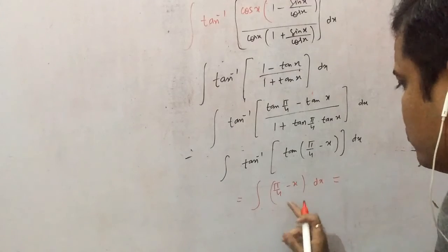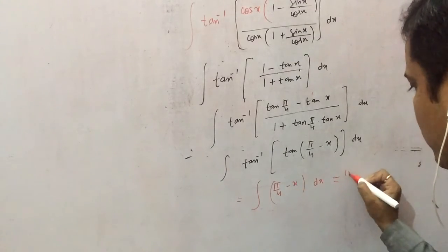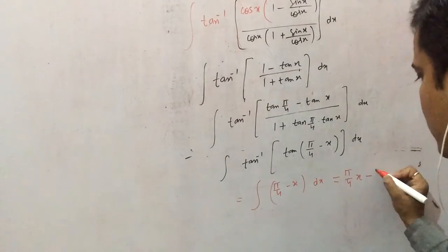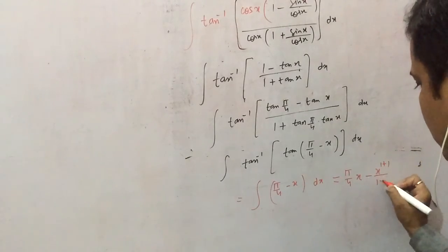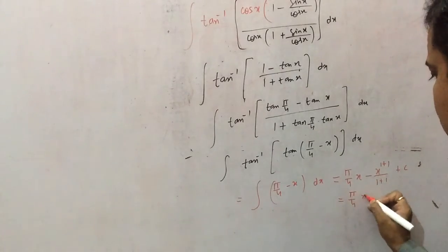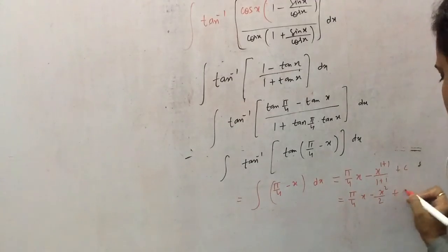And you know the integration of these two. Integration of pi by 4 is pi by 4 x minus integration of x, which is x raised to power n plus 1 upon n plus 1, 1 plus 1 upon 1 plus 1 like this. So you would end up with pi by 4 x minus x squared by 2 plus c.